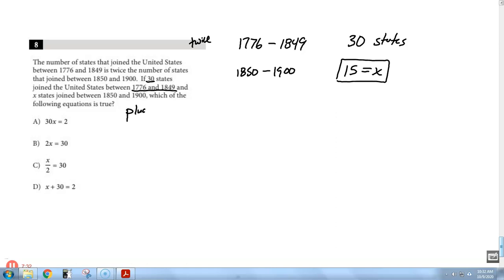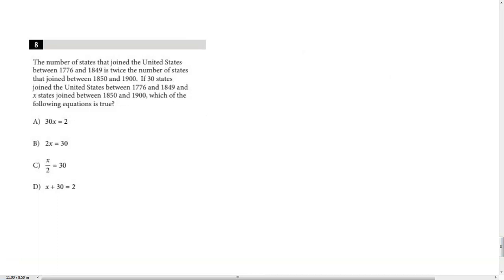So, what I need to do is I need to go over here to the equations, and I need to plug 15 in for X and see which one's true. So, if I put it in here, 30 times 15, well, that's 450. It's not 2. 2 times 15 is 30. So, I believe we have an equation that works. Let's just double-check it. 15 divided by 2. No, that's supposed to be 7 1/2. And 15 plus 30 is 45, not 2. So, correct answer, B. Thank you.